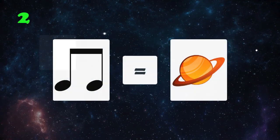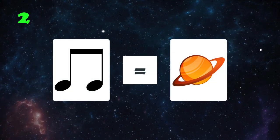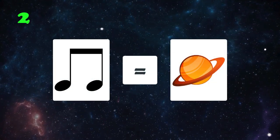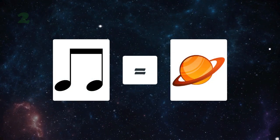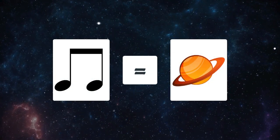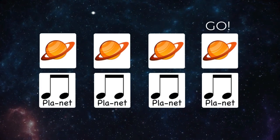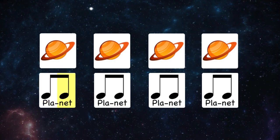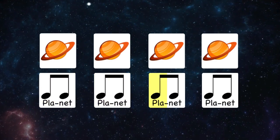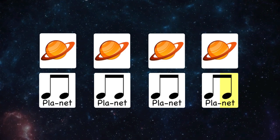When you see a pair of eighth notes, you're going to say the word 'planet.' Let's try four of those in a row. One, two, ready, go. Planet, planet, planet, planet.